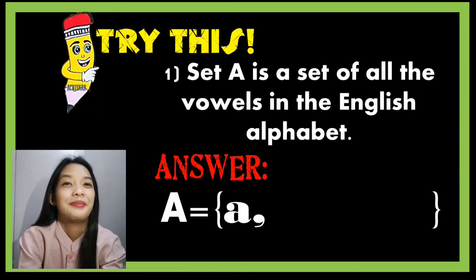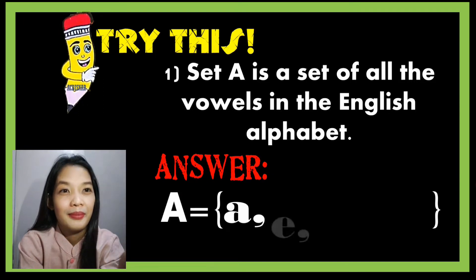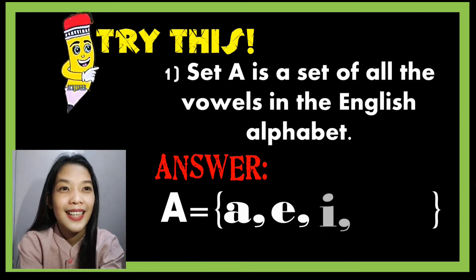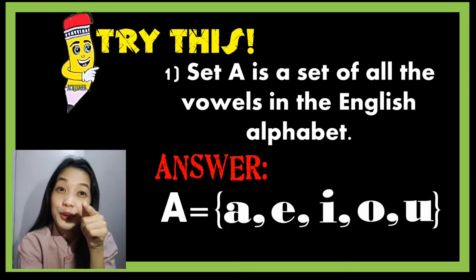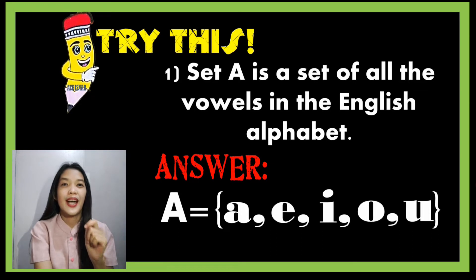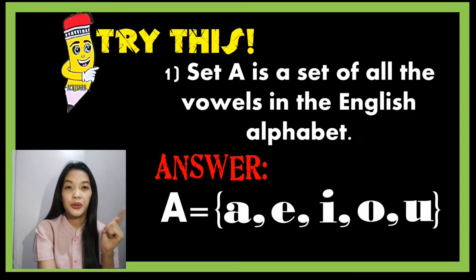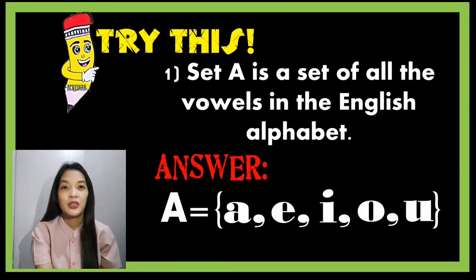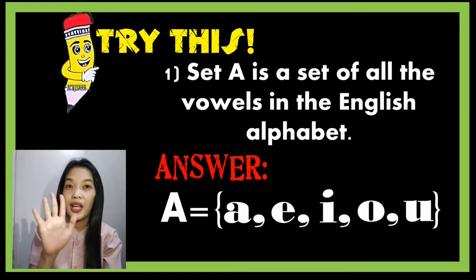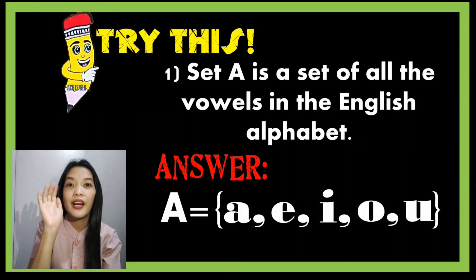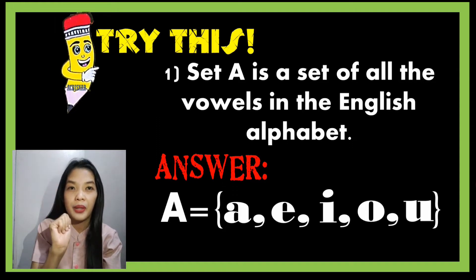After writing those, let us now identify the vowels in the English alphabet. The vowels are a, e, i, o, and u. So we have five elements or five members.